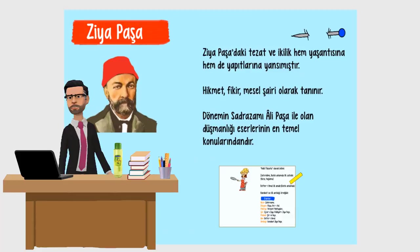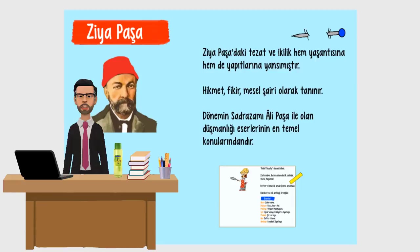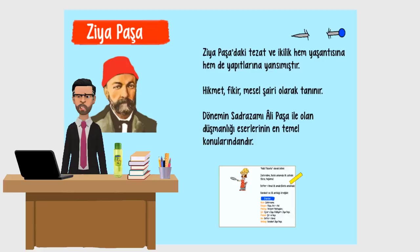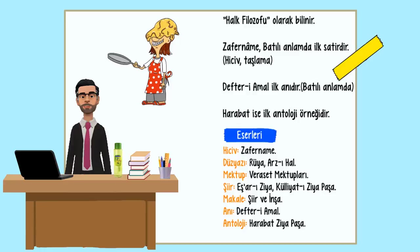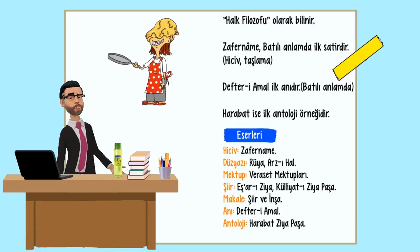Şimdi ise Ziya Paşa'ya bakalım. Ziya Paşa'daki tezat ve ikilik hem yaşantısına hem de yapıtlarına yansımıştır. Hikmet, fikir, mesel şairi olarak tanınır. Dönemin sadrazamı Ali Paşa ile olan düşmanlığı eserlerinin en temel konularındandır. Halk filozofu olarak bilinir. Zafername, batılı anlamda ilk satir örneğidir. Defter-i Amal ilk anıdır. Harabat ise ilk antoloji örneğidir.